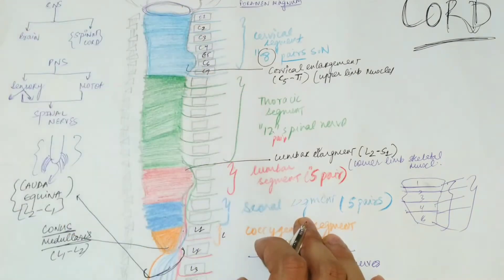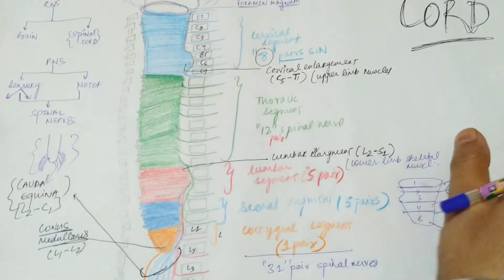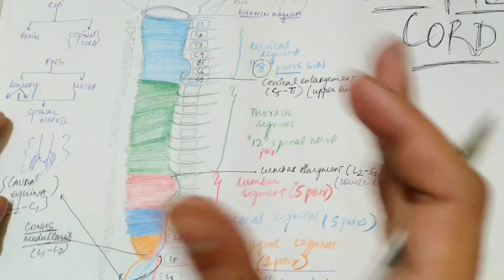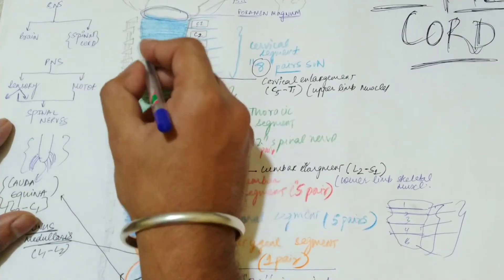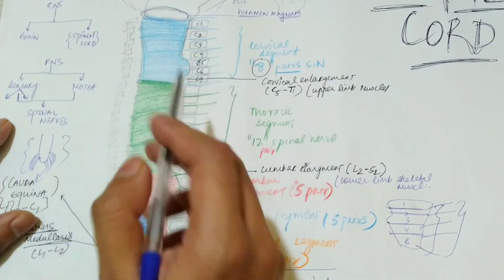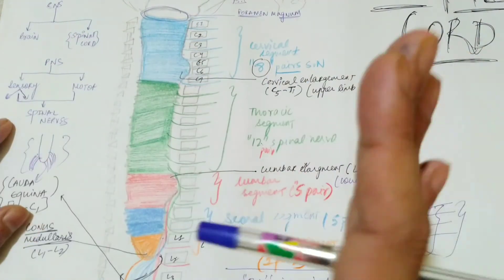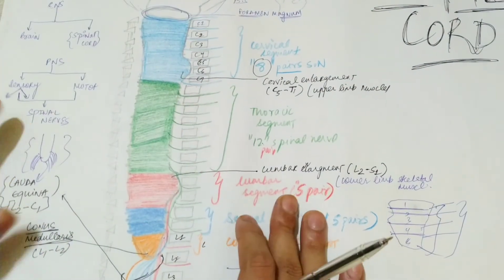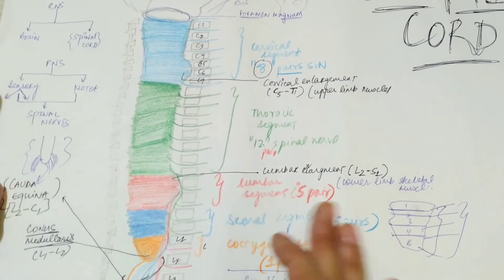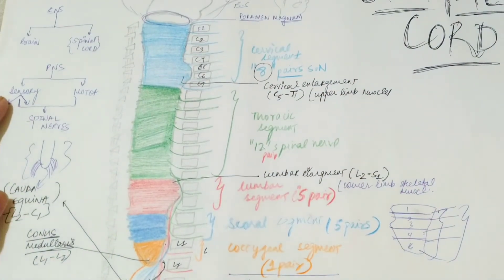This was the basic gross anatomy of the spinal cord. In the next video, we will take transverse sections at different levels — cervical, thoracic, and lumbar — and discuss the internal anatomy including the gray matter, white matter, and the horns that are present.